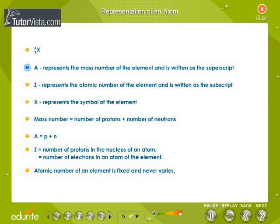A represents the mass number and is written as the superscript. Z represents the atomic number and is written as the subscript. X represents the symbol of the element. Mass number is the number of protons and the number of neutrons. A is equal to P plus N. Z is the number of protons in the nucleus of an atom, and it is equal to the number of electrons in an atom of the element. Atomic number of an element is fixed and never varies.